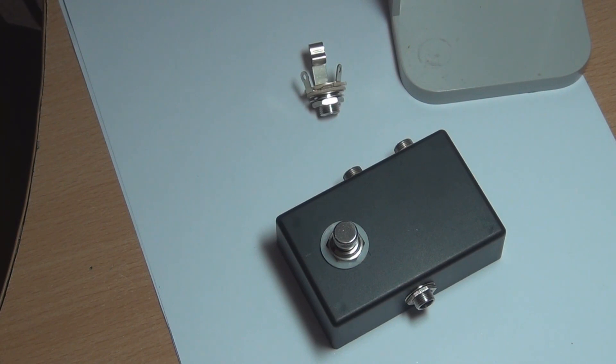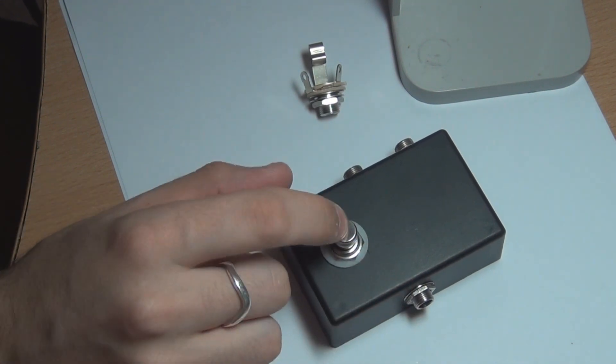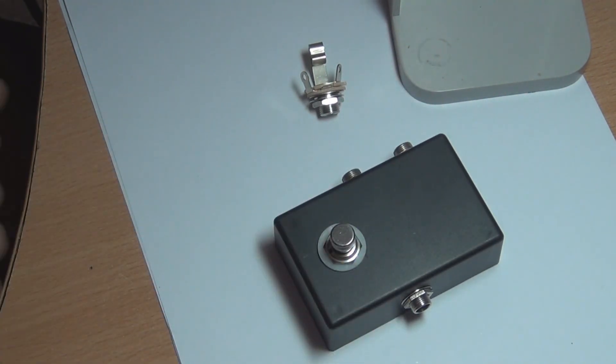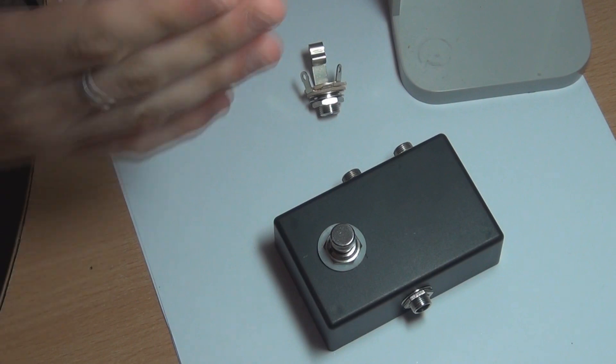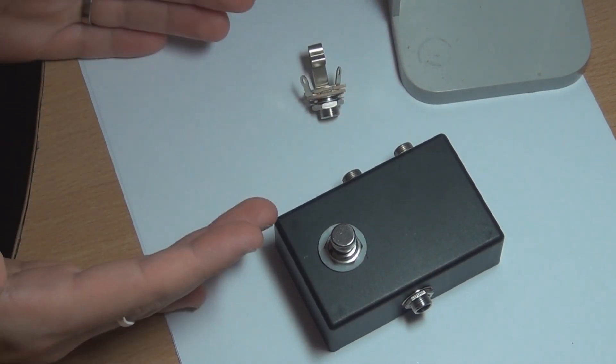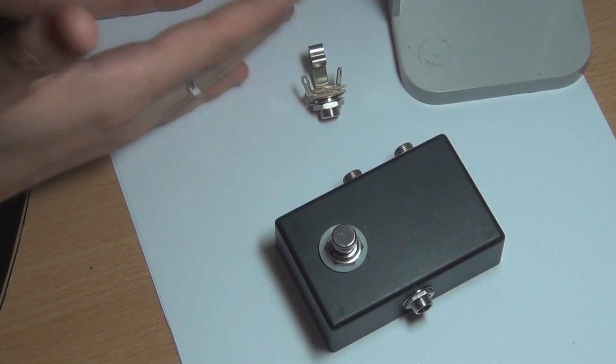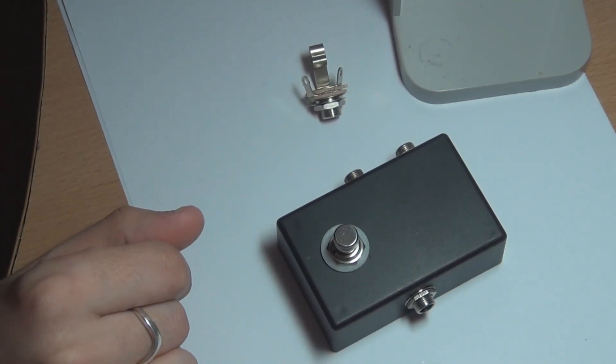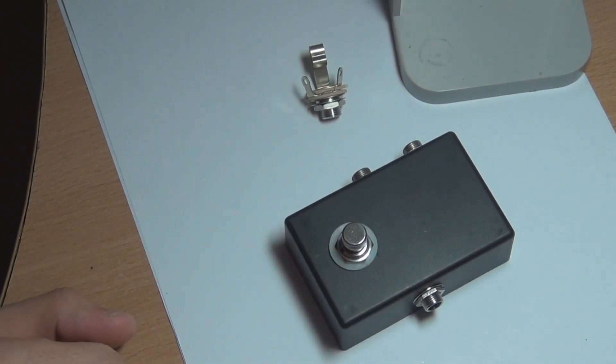So that's the A/B switcher. Pretty simple to put together. One of those things that's pretty handy to have around sometimes when you want to make a comparison or you want to quickly switch between two pedals on one channel and two pedals on the other. It's kind of, you've got to be pretty quick to go off, off, on, on, particularly in a live situation. It's not really going to work that well. So that's where something like this can come in handy.